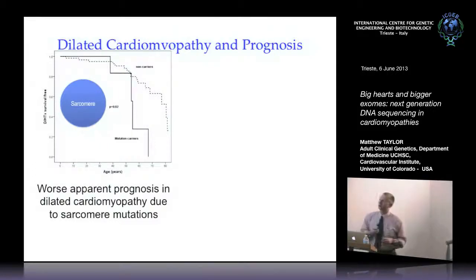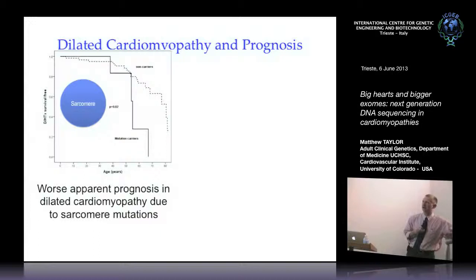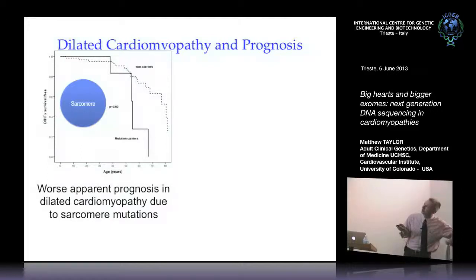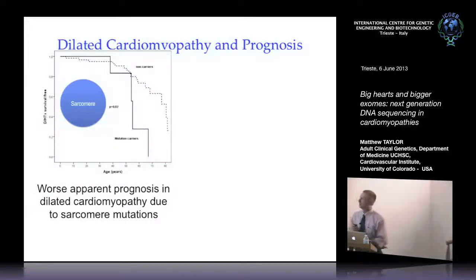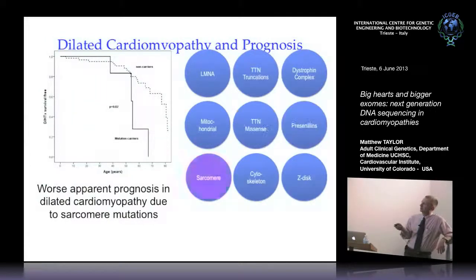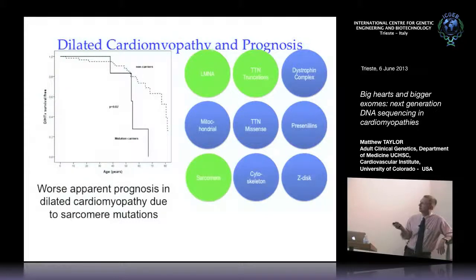It's not just about finding genes — we're trying to figure out how to help patients. We have data showing that individuals with mutations in sarcomere genes have a different prognosis than those who don't: survival events happen quicker for those with sarcomere mutations. Individuals with lamin mutations have a more severe problem. Titin truncations didn't seem to affect prognosis very much but were more of a problem for men than women.